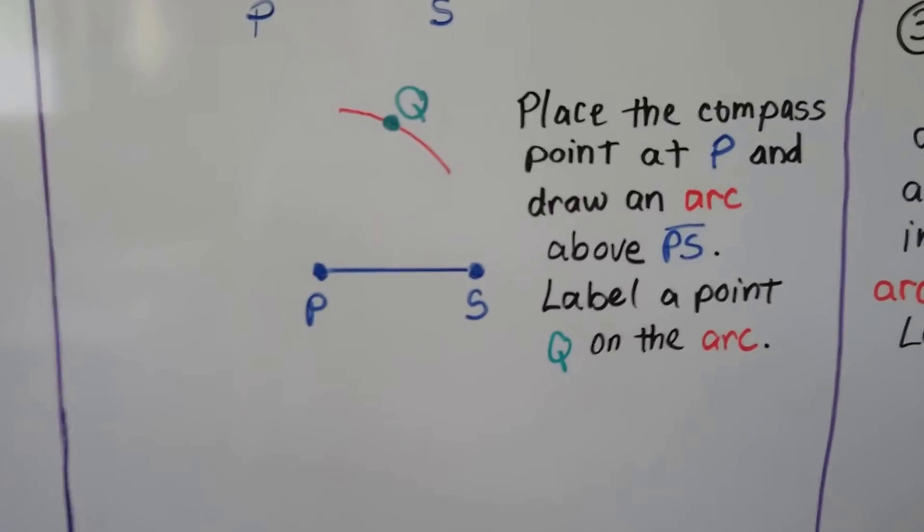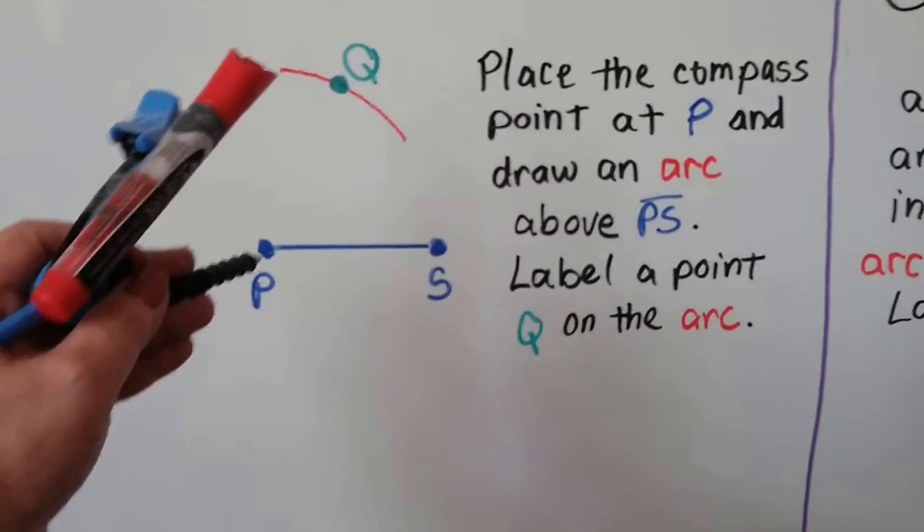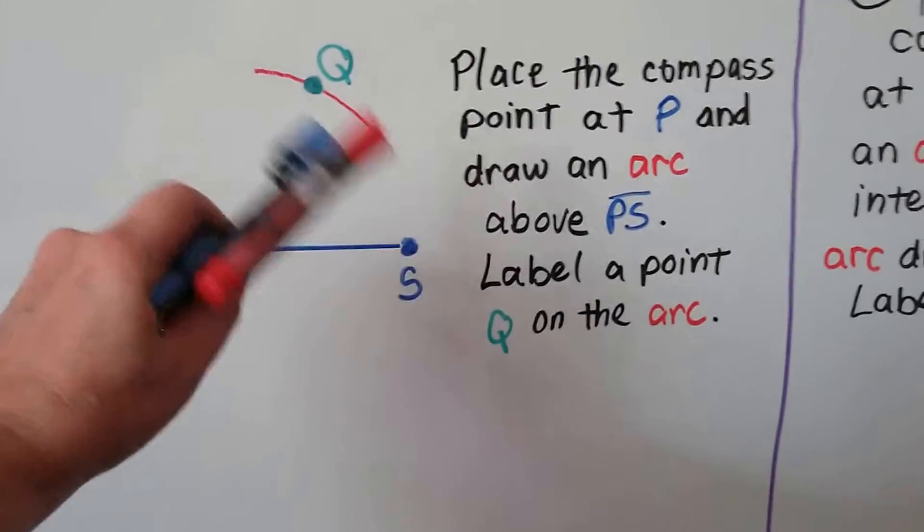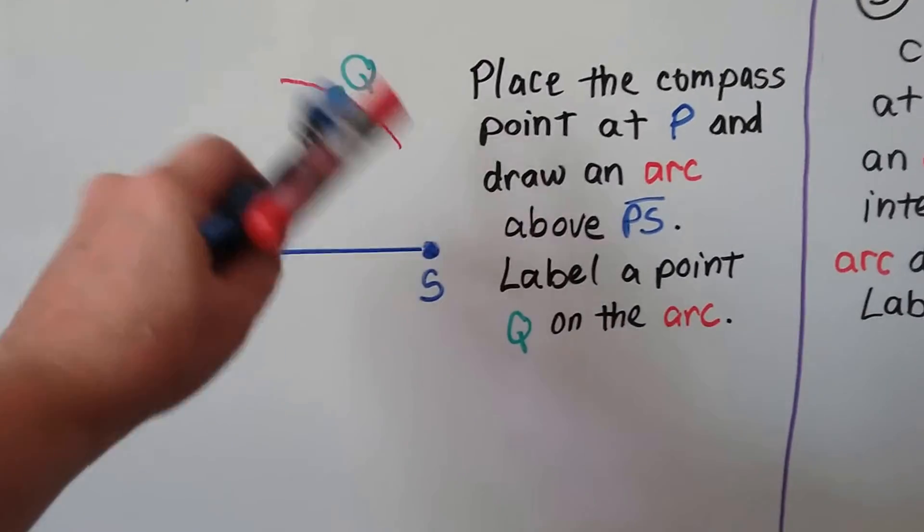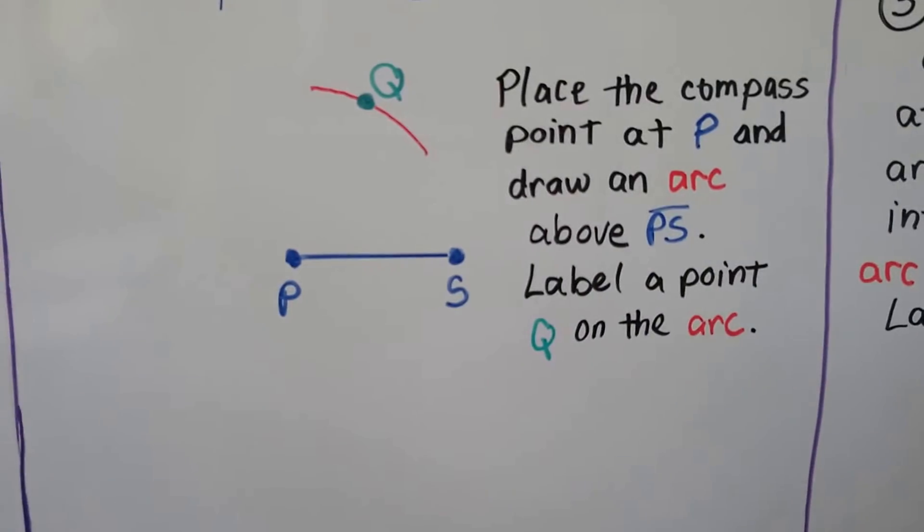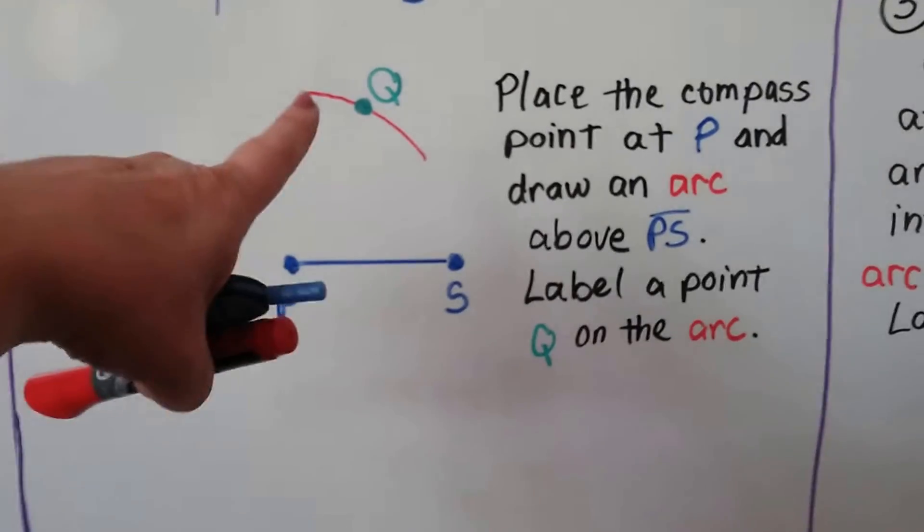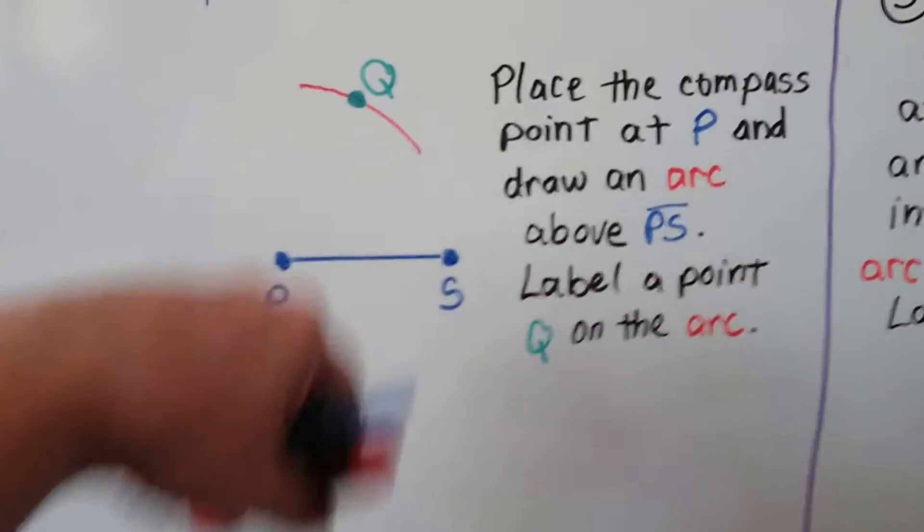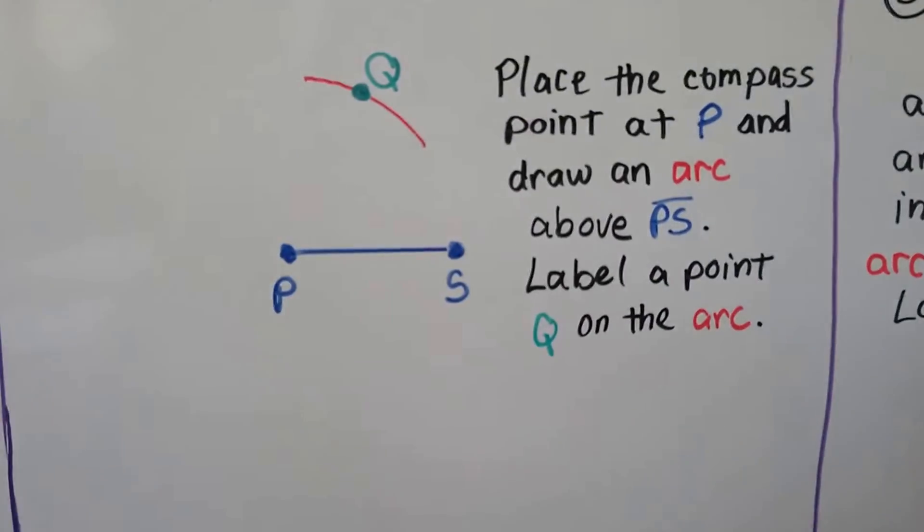Now what we do is we place the compass point at P and we draw an arc above PS. We label that point Q right on the arc and you could make it up here, you could make it down here. It just depends on how much you want your rhombus to lean.